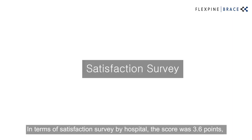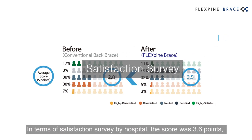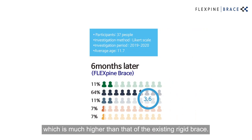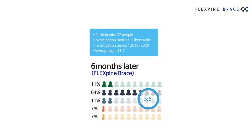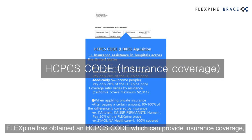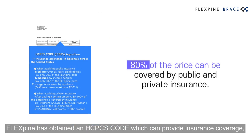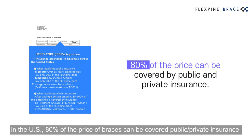In terms of a satisfaction survey by the hospital, Flexpine scored 3.6 points, which is much higher than that of the existing rigid brace. Flexpine has obtained an HEPCS code which can provide insurance coverage in the U.S., and 80% of the price of braces can be covered by public and private insurance.